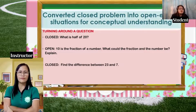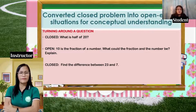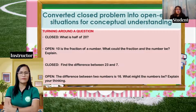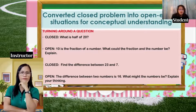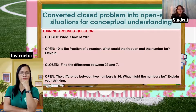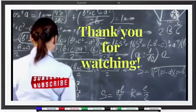Another example: the closed problem 'Find the difference between 23 and 7' — 23 minus 7 will always be 16, one correct answer. If we turn that into an open-ended problem: 'The difference between two numbers is 16 — what are the numbers?' We can subtract 17 minus 1, 18 minus 2, 19 minus 3, and the answer will be 16 each time. So it has many possible answers. Thank you for listening, everyone. God bless!